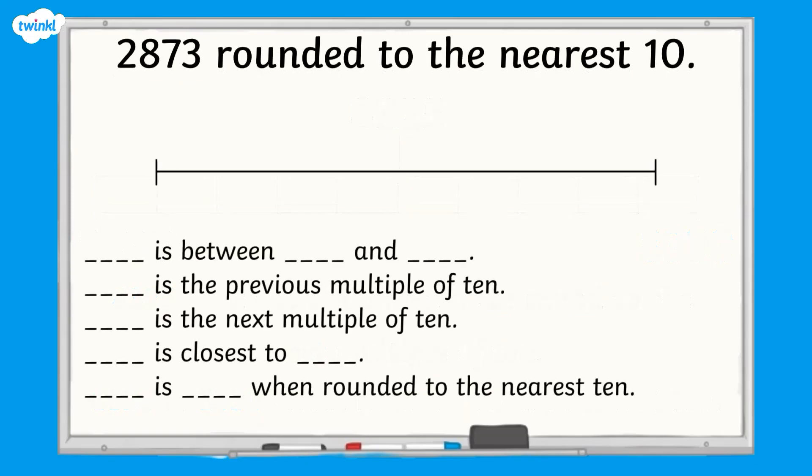Now it's your turn. Round 2873 to the nearest 10. Use the number line and the stem sentences to help. Pause here until you're ready to check your answer.